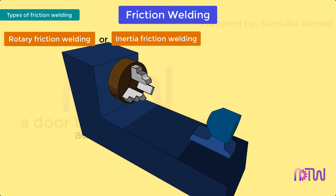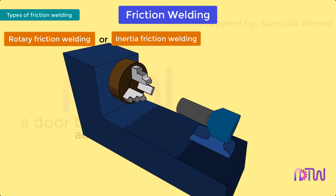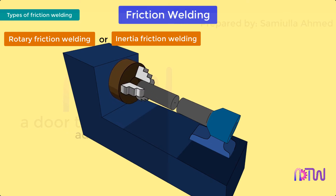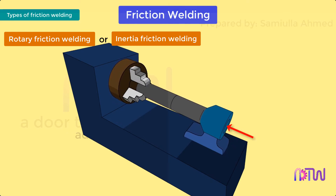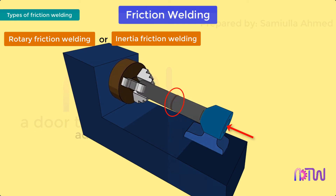Rotary friction welding, also called inertia friction welding: one metal is held stationary and the other is mounted in a spindle and made to rotate at a very high speed. The two workpieces are then brought into contact with each other, and with the continuous rotation of one metal and an axial force applied to both workpieces, friction is generated at the interface and a weld is produced.